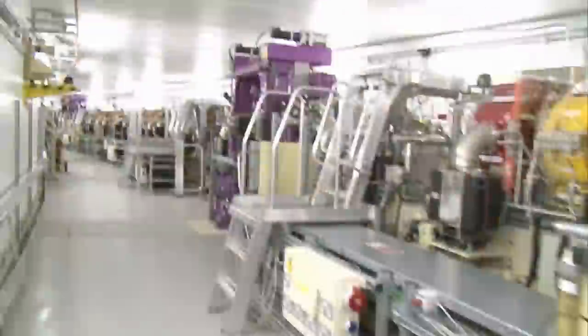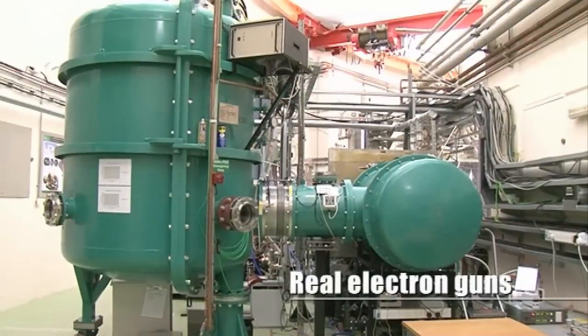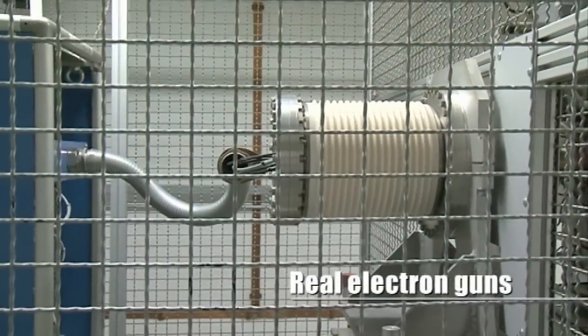A particle accelerator can be broken down into a number of different sub-assemblies, and the electron gun is one of those assemblies, and it is arguably the most important.